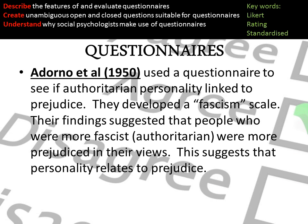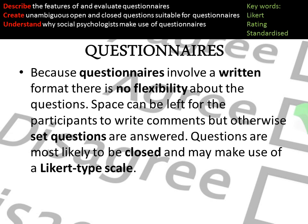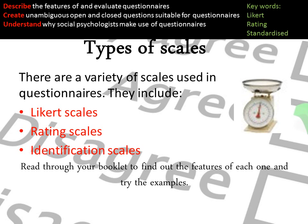An example of when questionnaires have been used is Adorno et al. in 1950. They used a questionnaire to see if authoritarian personality can be linked to prejudice, and from this they developed a Fascism Scale. They found that people who scored higher on fascism had more prejudiced views. Subjectivity is where the researcher may cause bias by interpreting results influenced by their own views.